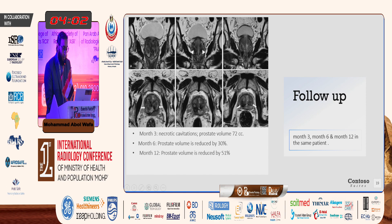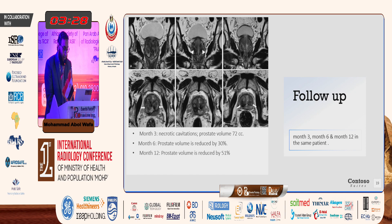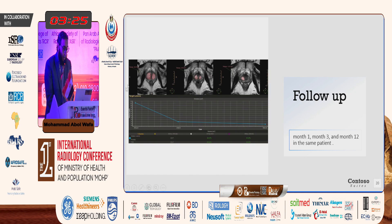Follow-up imaging was performed at three months, six months, and twelve months. On coronal and axial T2-weighted images, we can see the cavity produced by the ablation. After six months, it decreased in size. After twelve months, the prostate volume is reduced by 51% of its original size. A follow-up of the cavity is shown at one month, three months, and twelve months.